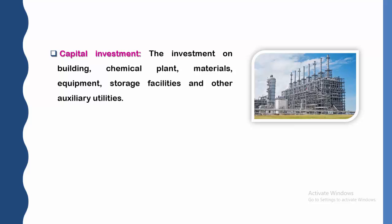Let's see one by one. The first is capital investment. The main investment on building, chemical plant, materials, equipment, storage facilities like godowns, and other auxiliary utilities constitutes the capital investment. The investment which we are going to put into building, plant, and equipment all falls under capital investment.